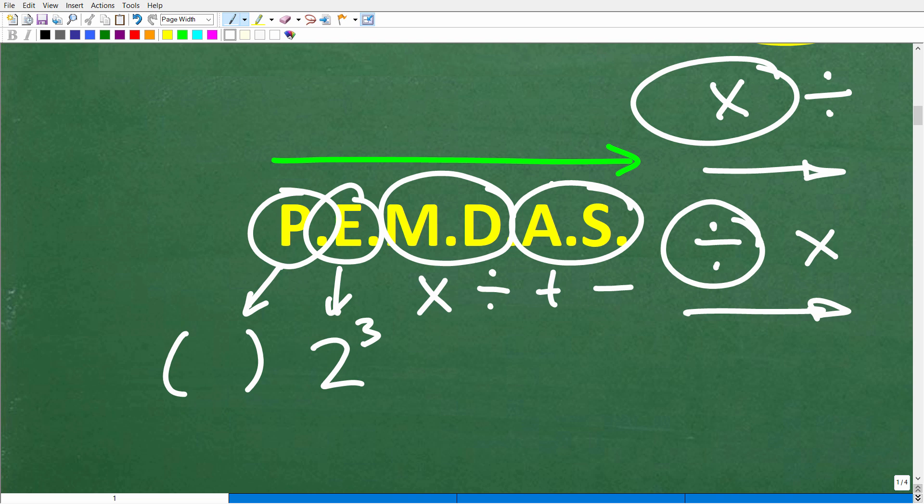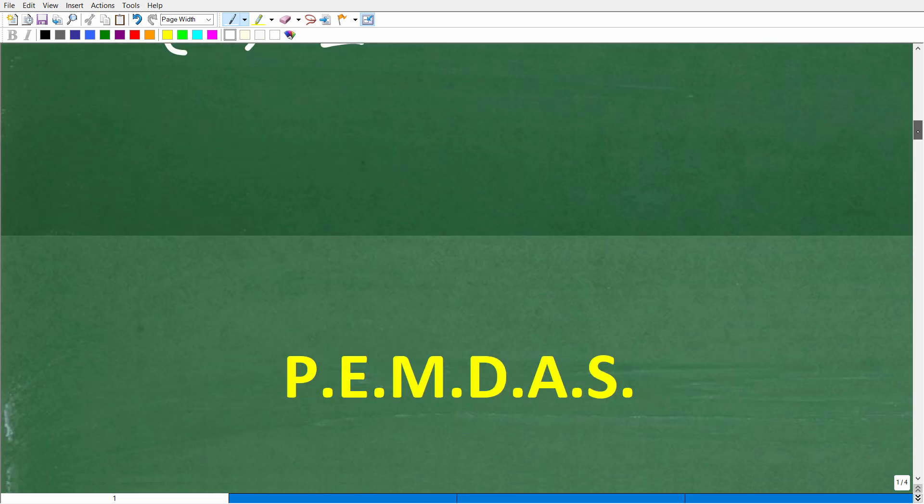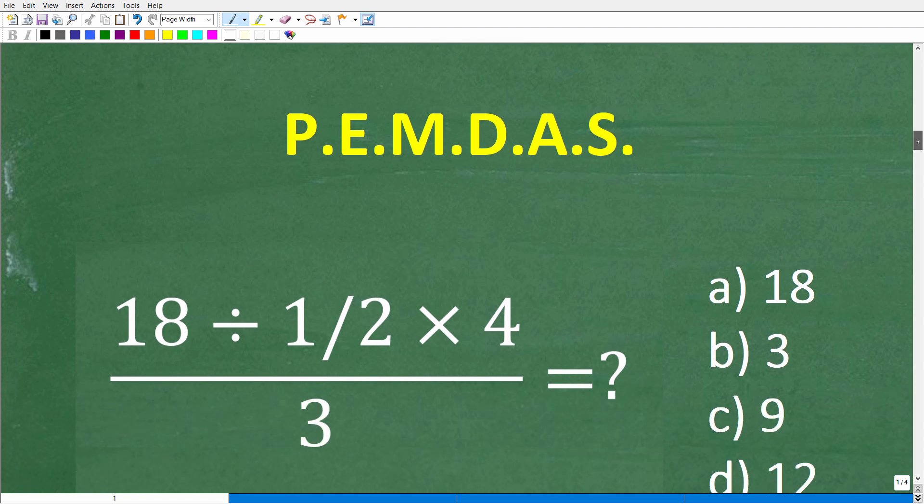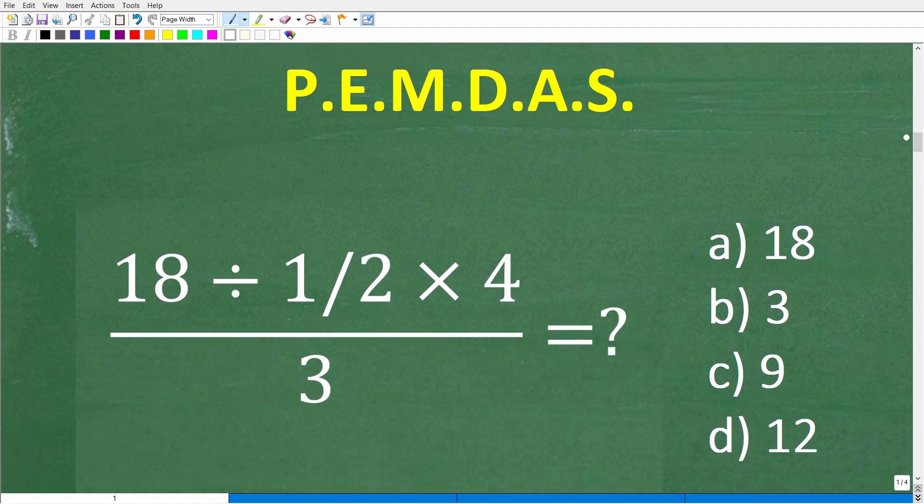Okay, so now that we understand PEMDAS and the order of operations, basically all we need to do is some basic mathematics. Okay, so here is our problem. And let's go ahead and think about what we need to do. So first things first, do we have any parentheses?